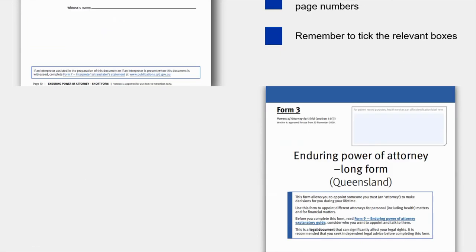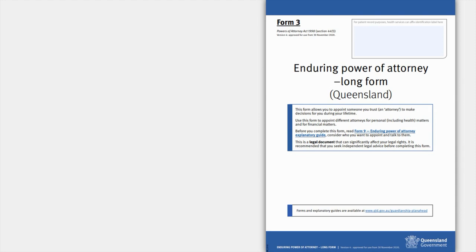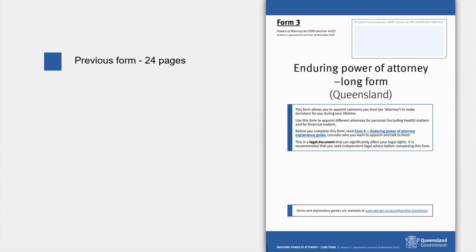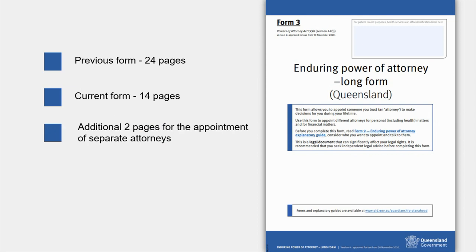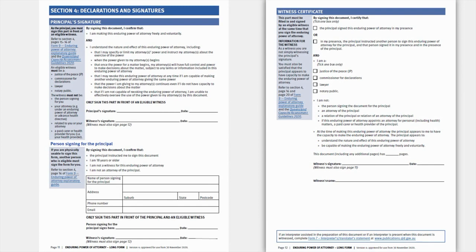Turning to page 10, the Witness Certificate, this is where you certify that the principal or the eligible signer signed the document in your presence. In addition to inserting your signature, full name and date, you now need to insert the total number of pages the EPA has, including any additional pages. This is also where you confirm your eligibility as a witness, so please do not forget to select the relevant boxes on this page. If the adult wishes to appoint different attorneys for personal matters and financial matters, then the Enduring Power of Attorney Long Form, or Form 3, should be used — there are only two additional pages compared to the short form due to the separate appointment of attorneys. With Form 3, you are still only required to sign two pages: page 11, Declarations and Signatures, and page 12, Witness Certificate.